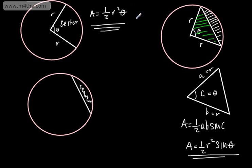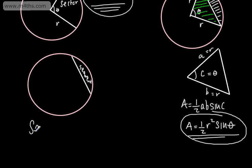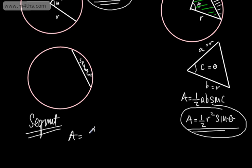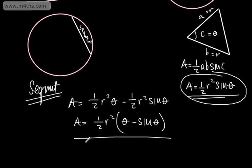So the area of that particular triangle is going to be one-half ab, which is r times r, so r squared, and then sine of c — c is theta — so that's sine theta. If we take the area of a sector and subtract away the area of a triangle, we get the area of a segment: one-half r squared theta minus one-half r squared sine theta. That's just a little isosceles triangle, as the radius is the same length. We can factor this: one-half r squared is common, leaving us theta minus sine theta, where we're measuring the angle in radians.